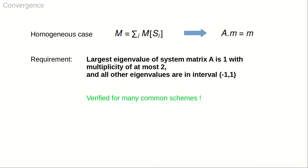The convergence criteria of these iteration techniques are generally well known. In the context of subdivision, the requirement for the convergence of the power iteration is that the system matrix A has largest eigenvalue 1 with multiplicity 1 or 2. All other eigenvalues have to be in the open interval minus 1 to 1. We have tested and verified this condition on many common schemes.